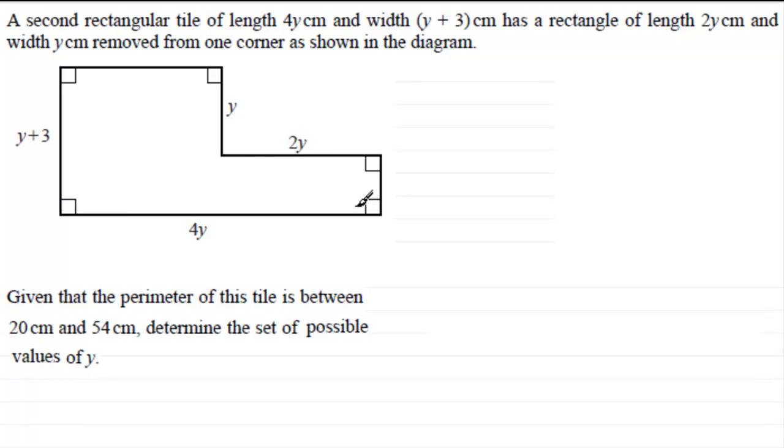If this is 4y and this is 2y, then clearly this must be 2y cm. And for this length here, we've got that this one's y. The total width is y plus 3, so that must mean that this length down here is going to be 3 cm. So now we're in a position to work out the perimeter just by adding those lengths together.